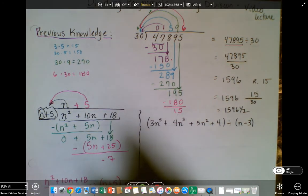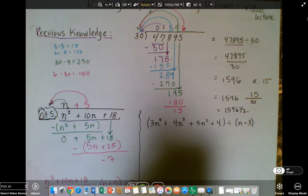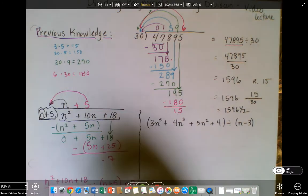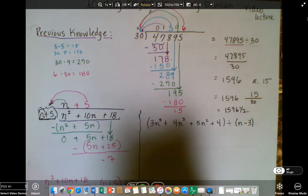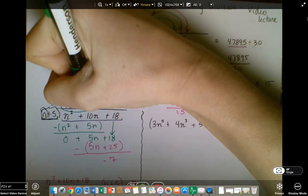This n plus 5 right here is coming from this term, the divisor. This n plus 5 right here is coming from our answer. So two different things.